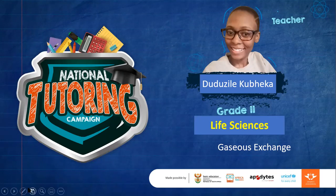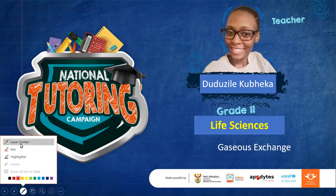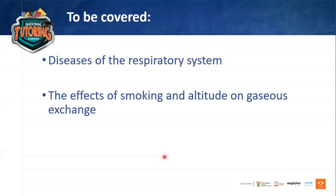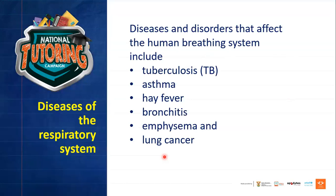Good morning, everyone. My name is Duduzile Kupeka, your grade 11 life sciences teacher. Today the topic to be covered are diseases of the respiratory system, as well as the effects of smoking and altitude on gaseous exchange. We're wrapping up — we've covered the processes of gaseous exchange, the organs involved, and the muscles involved. Now we're going to get into the diseases that affect the respiratory system.